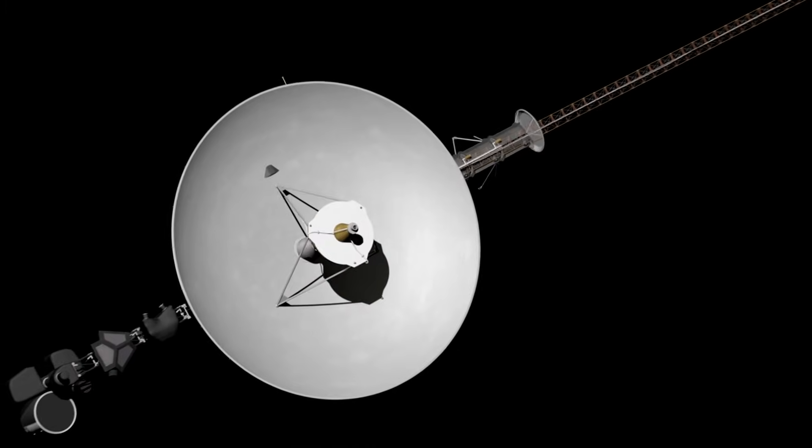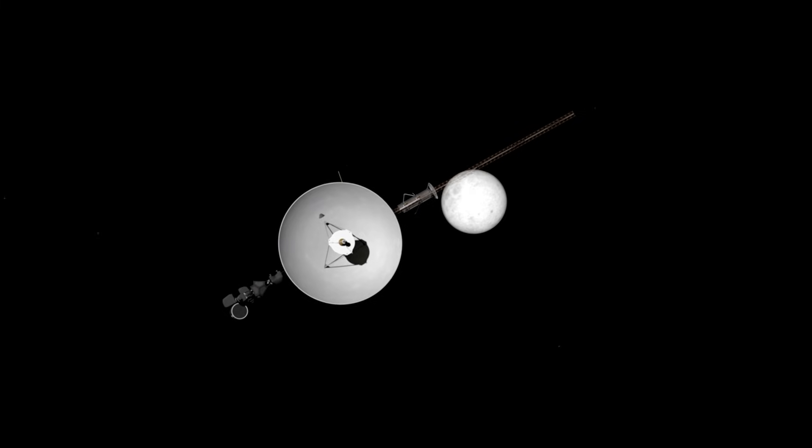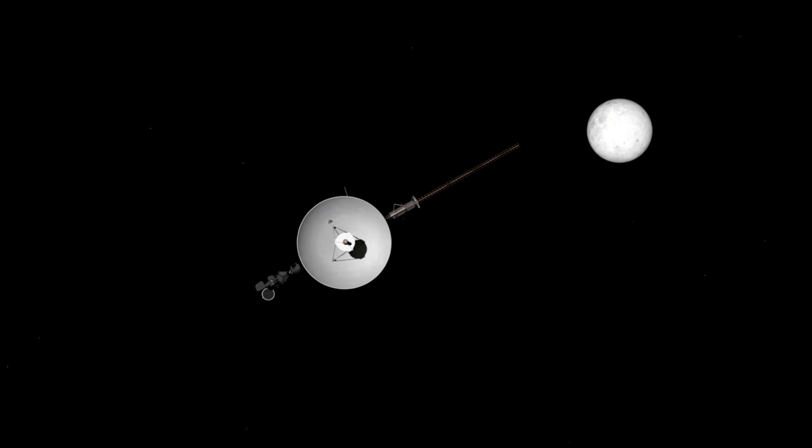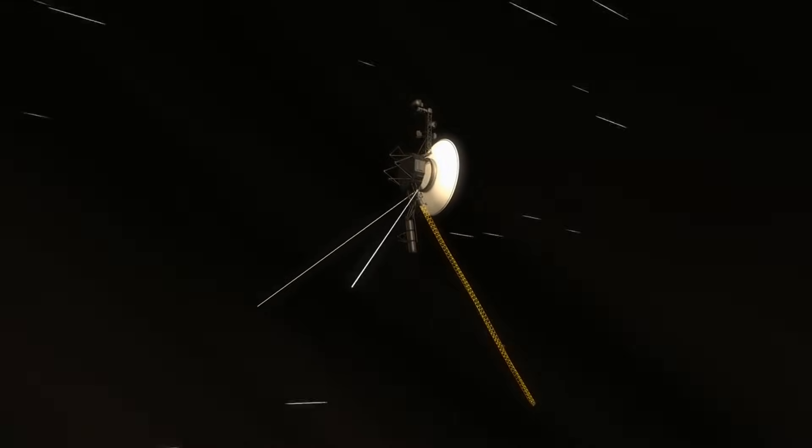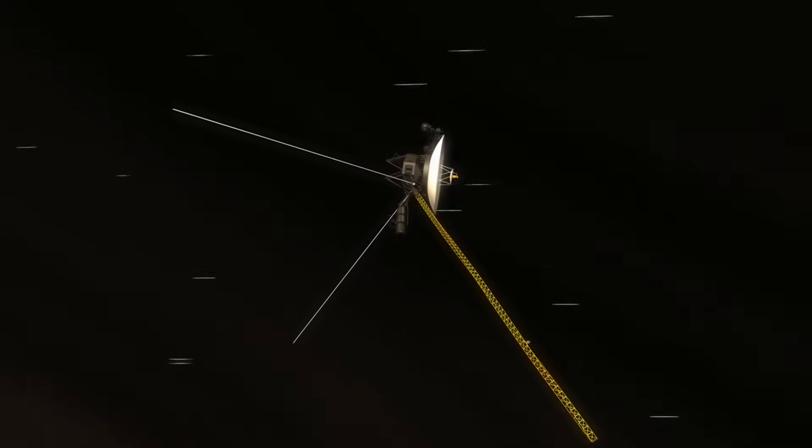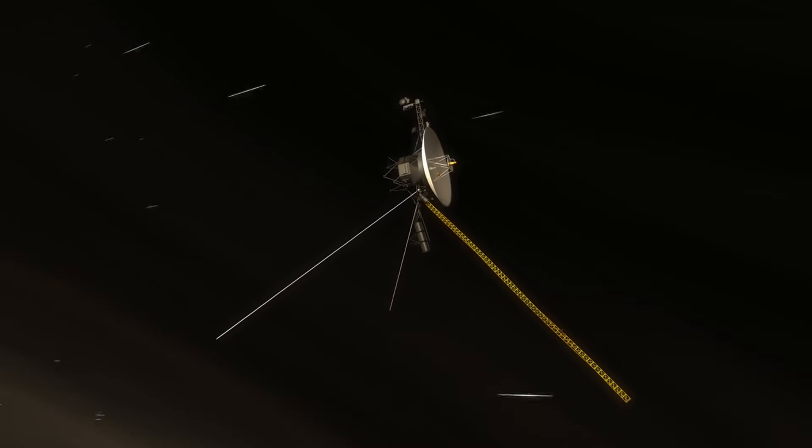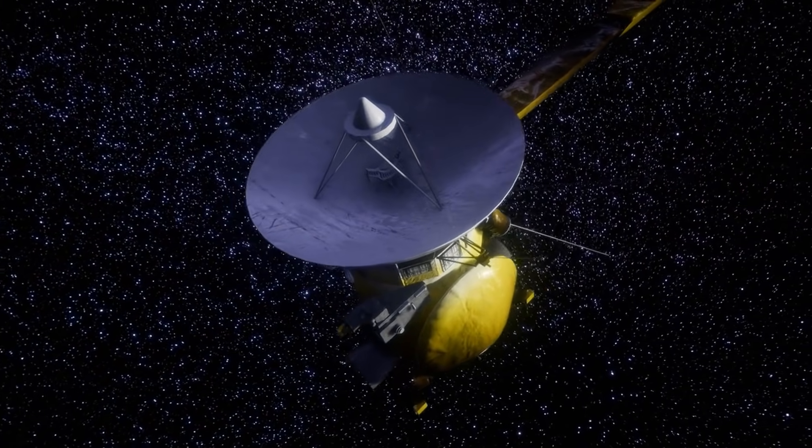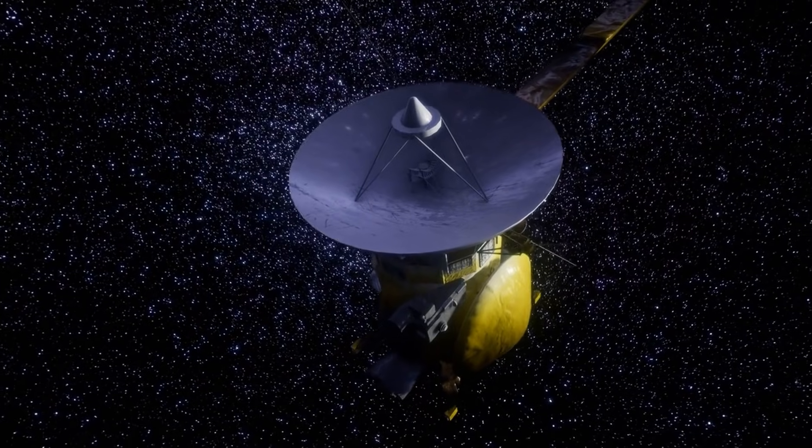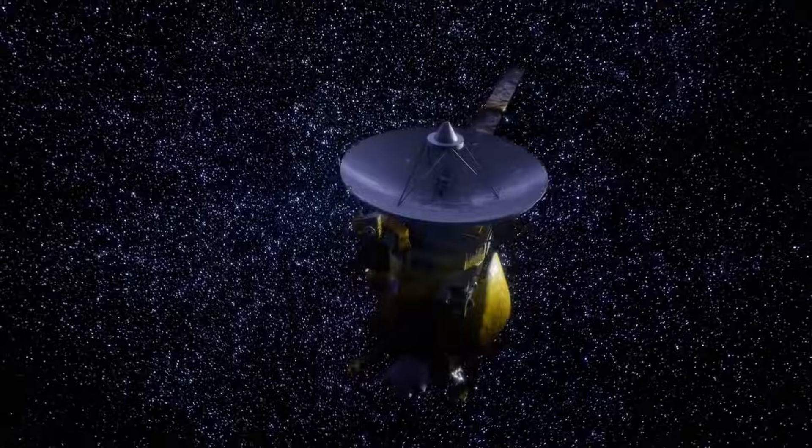That faint point became one of the most famous photographs ever taken. Not because of its detail, but because of what it represents. Every person who has ever lived, every story, every civilization, every moment in human history, all contained within a single pixel. Carl Sagan said it best, that's home, that's us, and he was right. It's impossible to see that pixel and not feel something. Awe, humility, maybe even a little sadness.